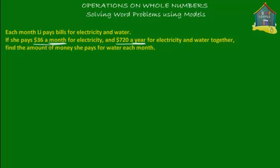So the question is: if she pays $36 a month for electricity and $720 a year for electricity and water combined, find the amount of money she pays for water each month. So two things are given to us: she pays $36 a month for electricity, and she pays $720 a year for electricity and water combined.